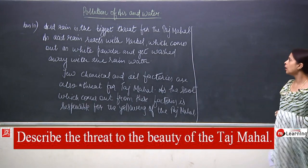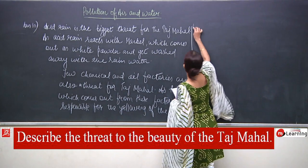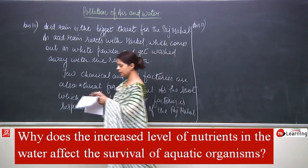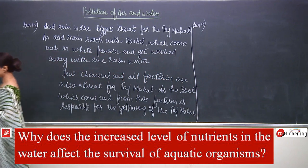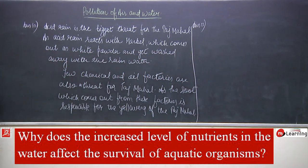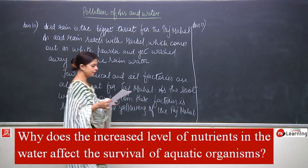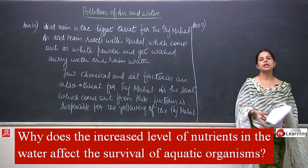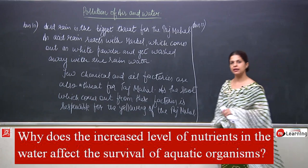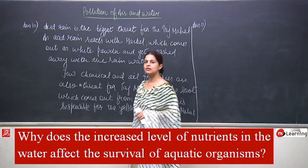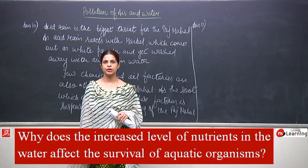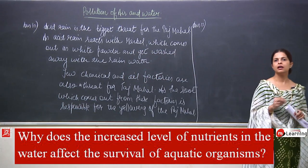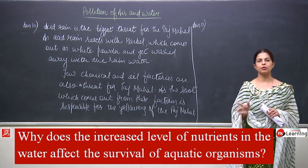Now we will talk about question number 11: why does the increased level of nutrients in the water affect the survival of aquatic organisms? This is known as eutrophication. When water from farms gets mixed with water bodies, it contains fertilizers.